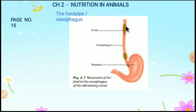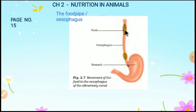The whole food pipe undergoes contraction and expansion. Here it contracts and here it expands — like squeezing a toothpaste tube — and it continuously contracts and expands, pushing the food downwards. This movement is called peristalsis.